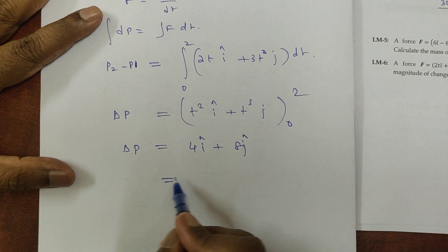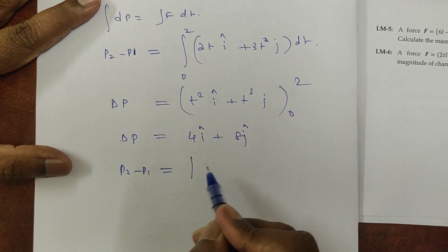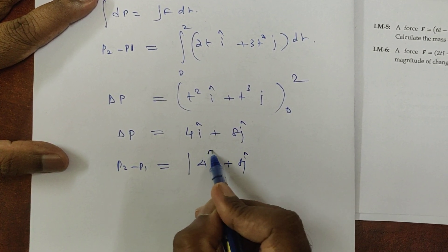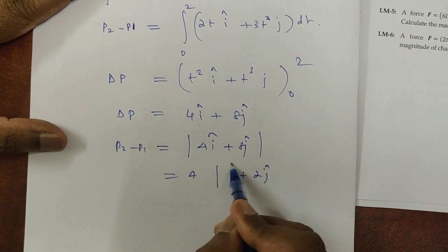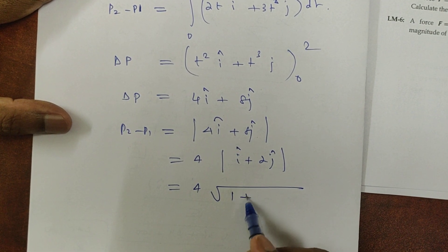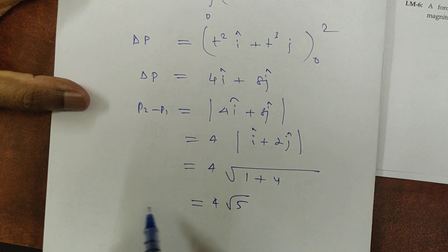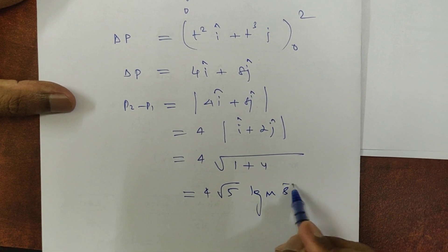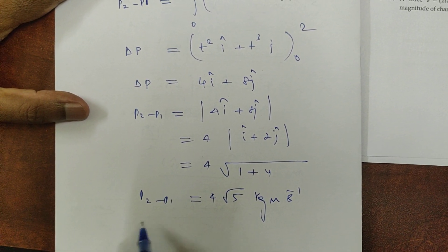Finding the modulus of delta p = 4î + 8ĵ: take out common factor 4, giving 4 × root of (1² + 2²) = 4 × √5 = 4√5 kg·m/s. This is the change in momentum. See you in the next video.